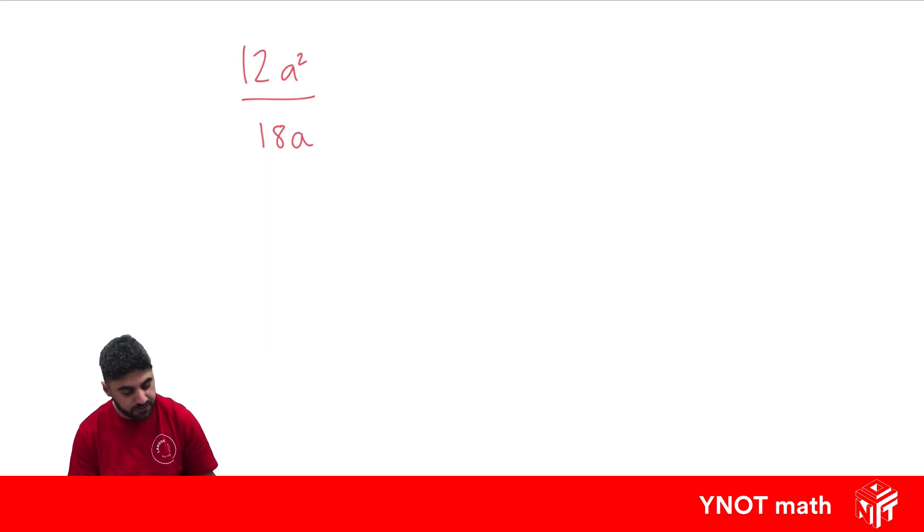So if we're ever in this situation, we get rid of the small one, and its power was 1. If there's no power, it means power of 1. We get rid of the small one, and then we subtract its power from the other one. So we're going to go 2 minus 1.